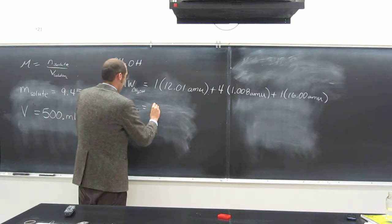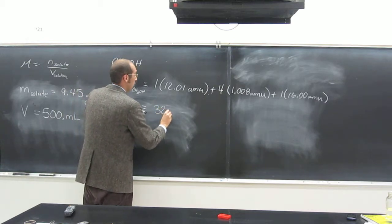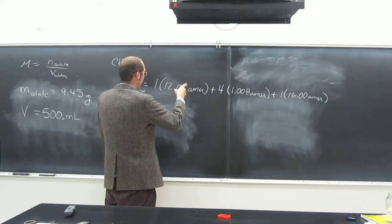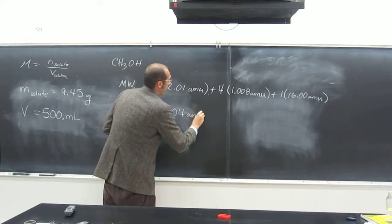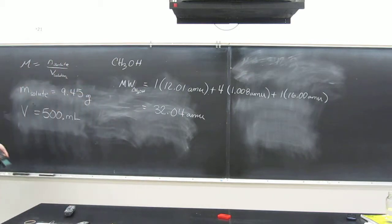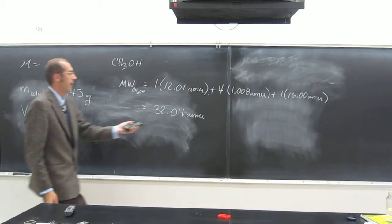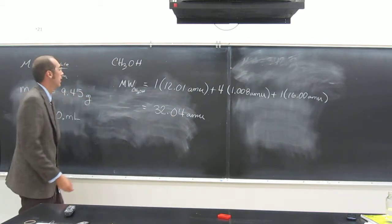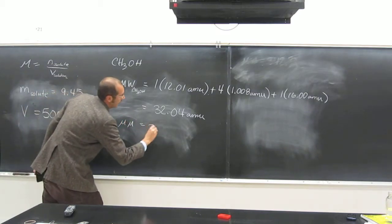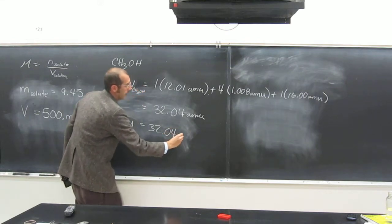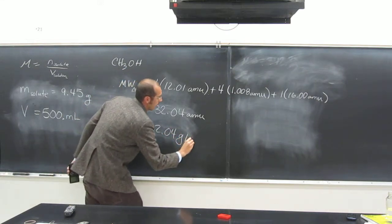Okay, so 32 point, well, we've got to go to 2, 0, 4, AMU, okay? And then, of course, this gives us the molar mass directly, right, the molar mass, 32.04, what, grams per mole.